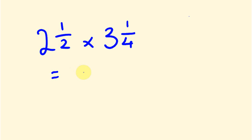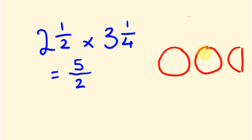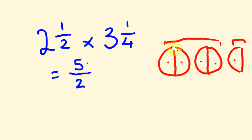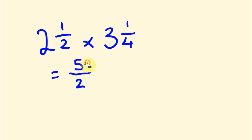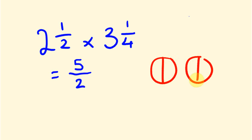The easiest way to convert is: the bottom number stays the same. Then you do two times two plus one, which is five. So two and a half becomes five over two. Conceptually, if I draw two and a half, you can count how many halves there are: one, two, three, four, five. There are two lots of two — that's our two times two part — plus one, giving us our top number of five. So there are five halves, and our bottom number is two.